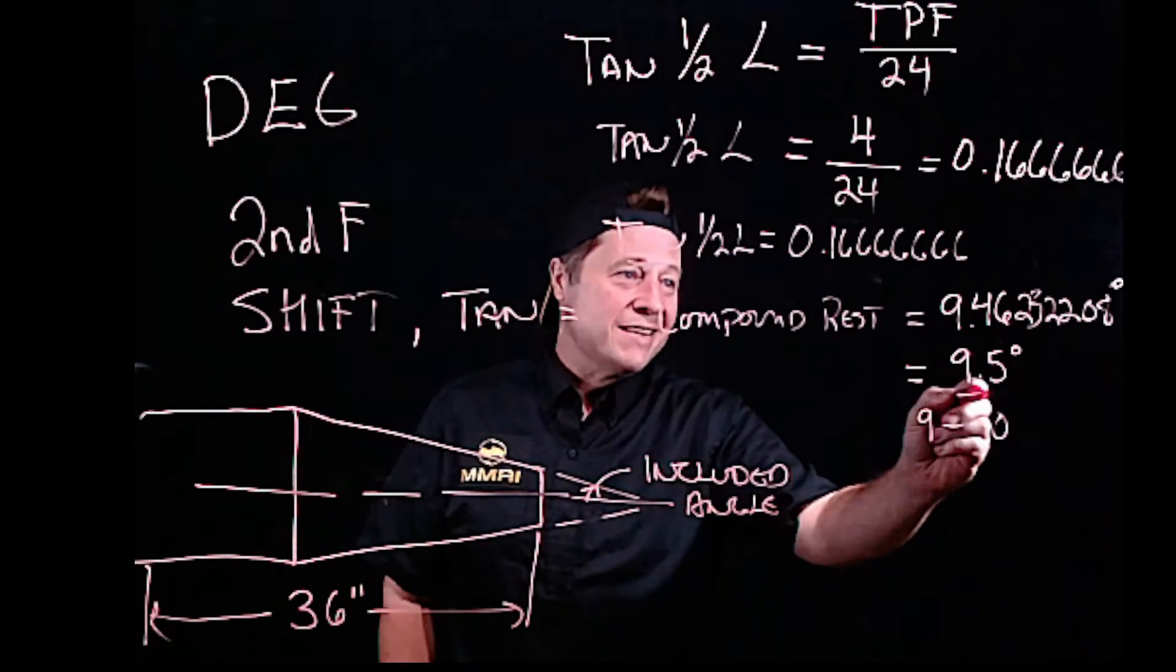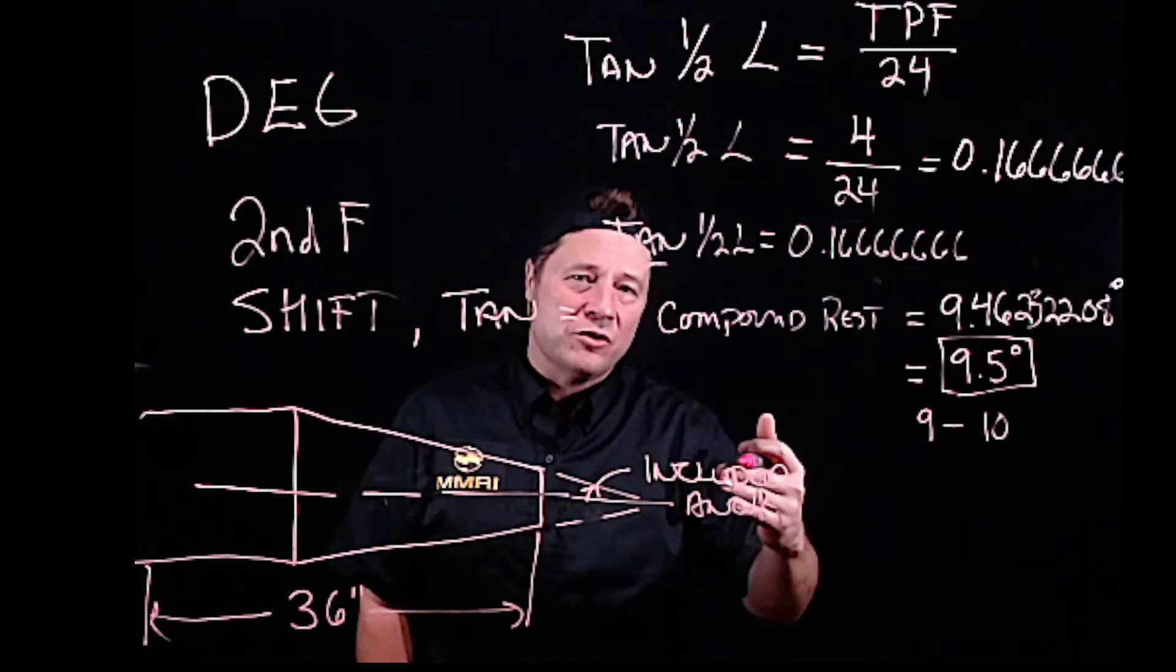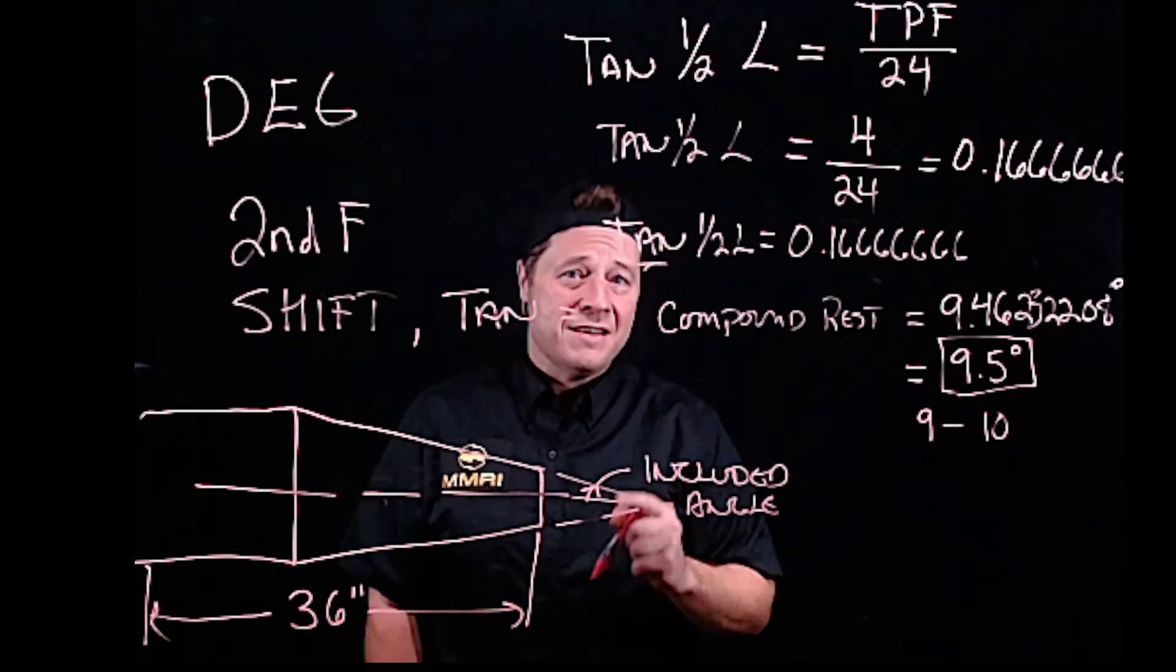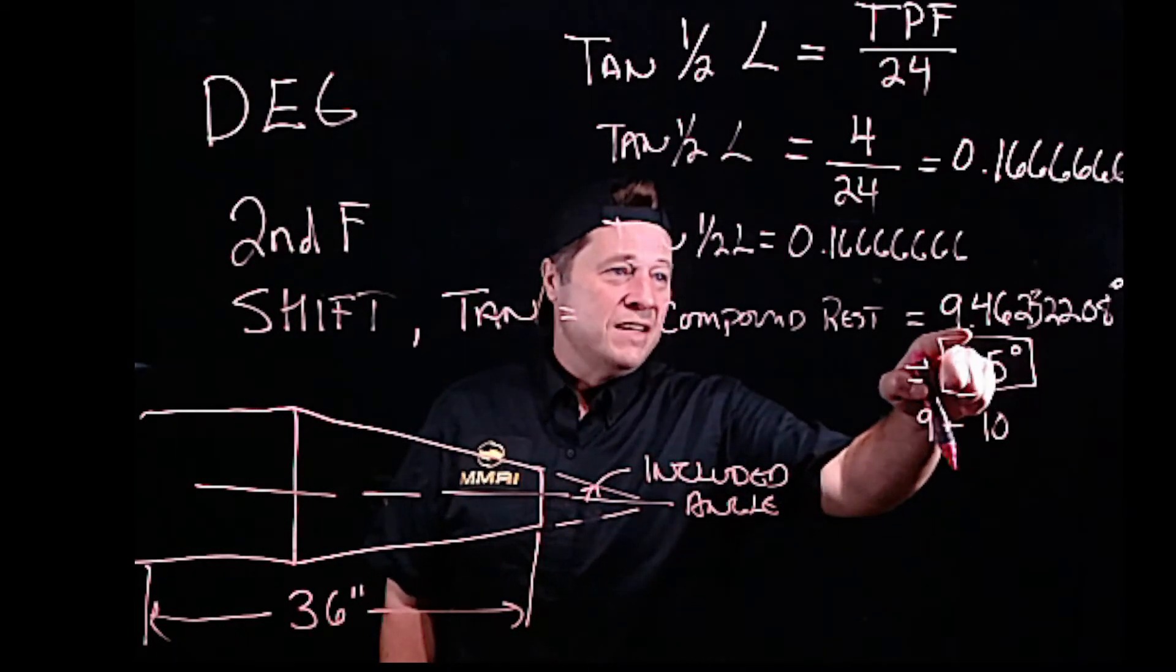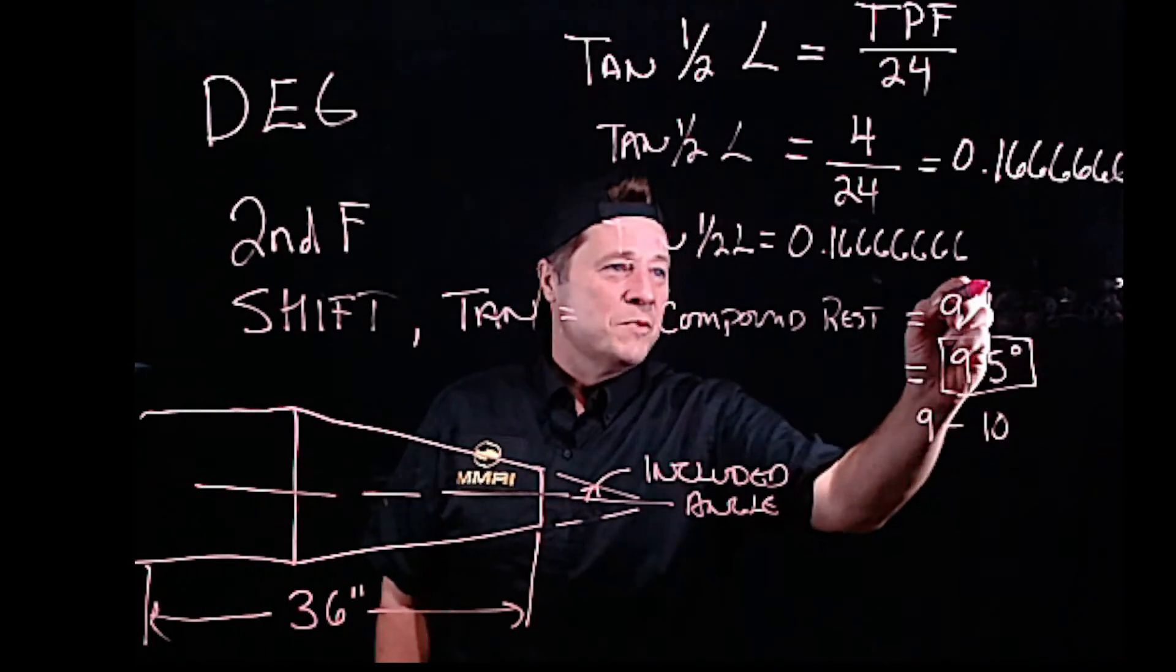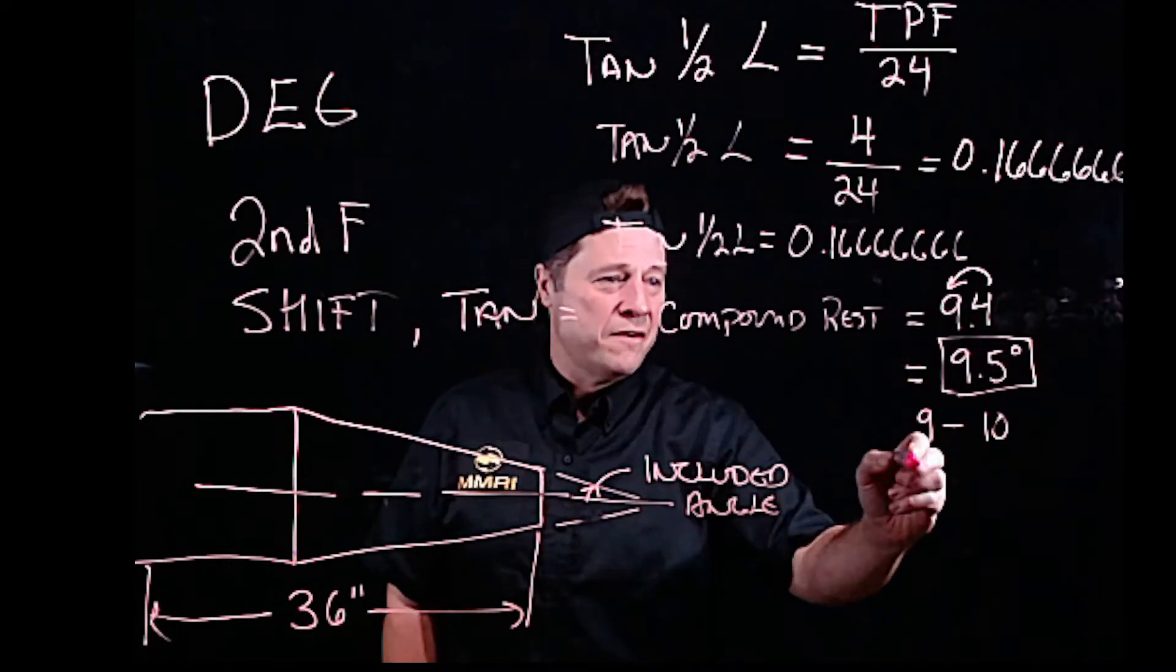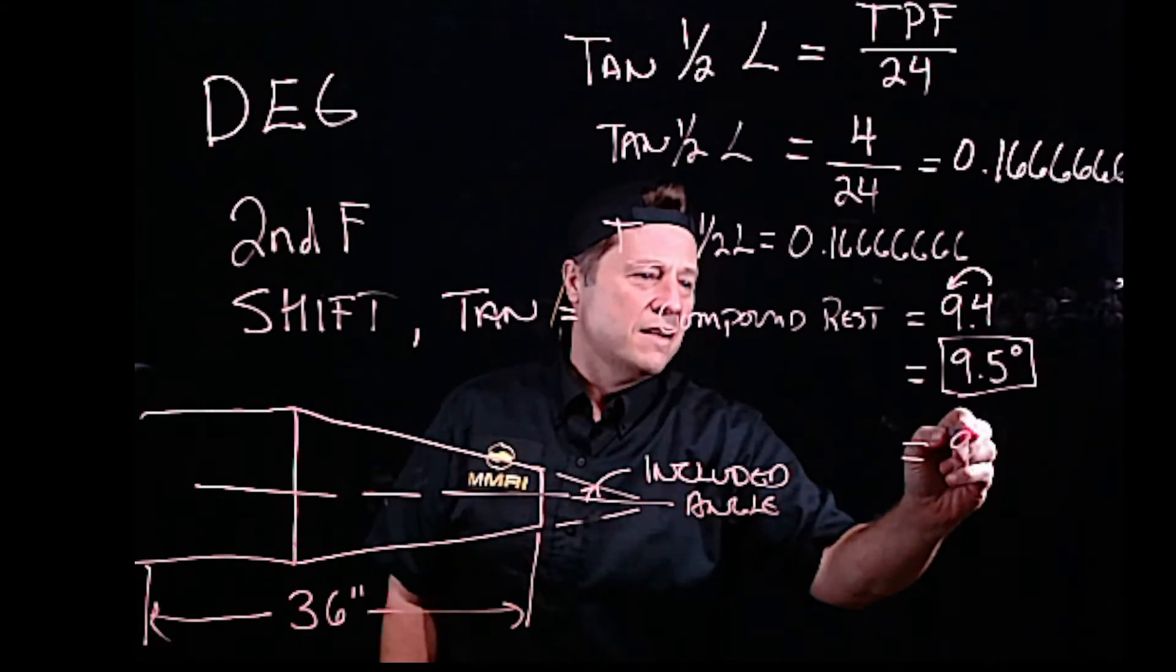For the practical application of this, if this is my answer, I'm going to round it to the nearest whole degree. I may try and set this, but the reality is it only has single degrees on the compound rest. If I were to round this to the nearest whole degree, I only need to look at one decimal place. Because this is less than 5, my answer is going to be 9 degrees.